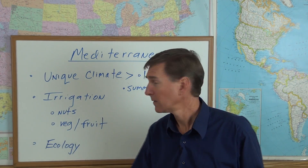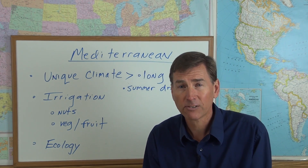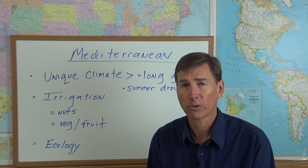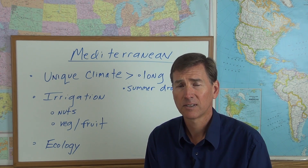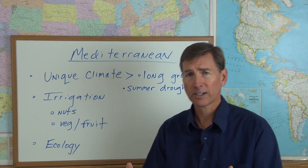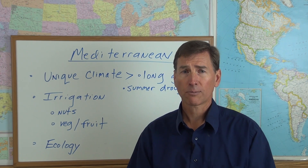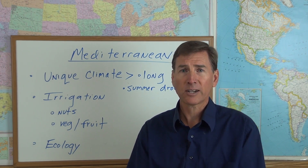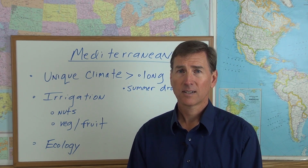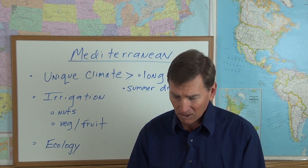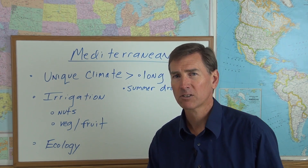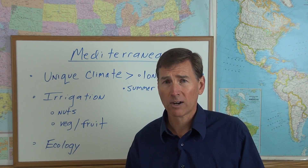With irrigation, California produces an enormous variety of crops. Nuts are a major category: walnuts, almonds, and pistachios — California produces 99% of these highly profitable nuts. Vegetables like bell peppers and other peppers require a long growing season at certain temperatures, which California's climate provides. A major problem with irrigation, however — examining the human ecology — is salinization: continued irrigation in dry climates draws salt to the surface through evaporation.